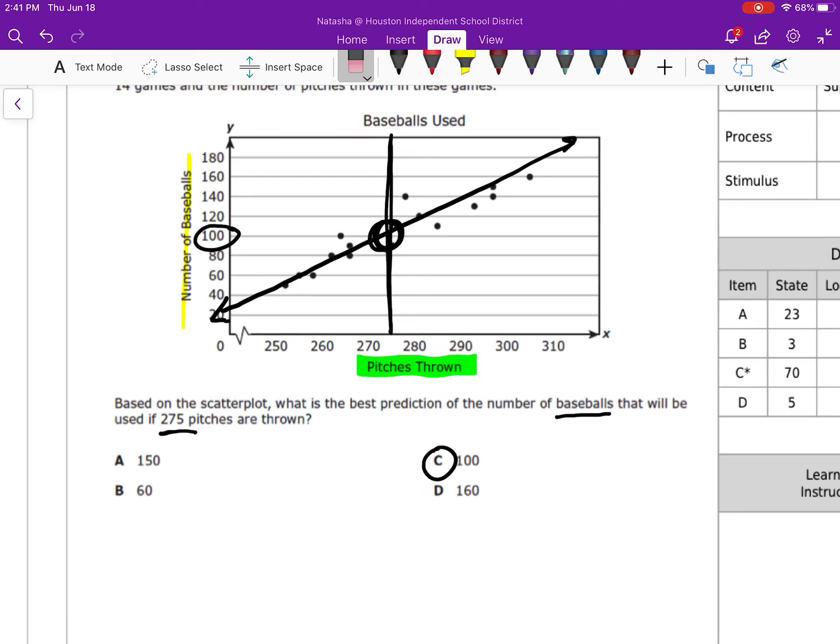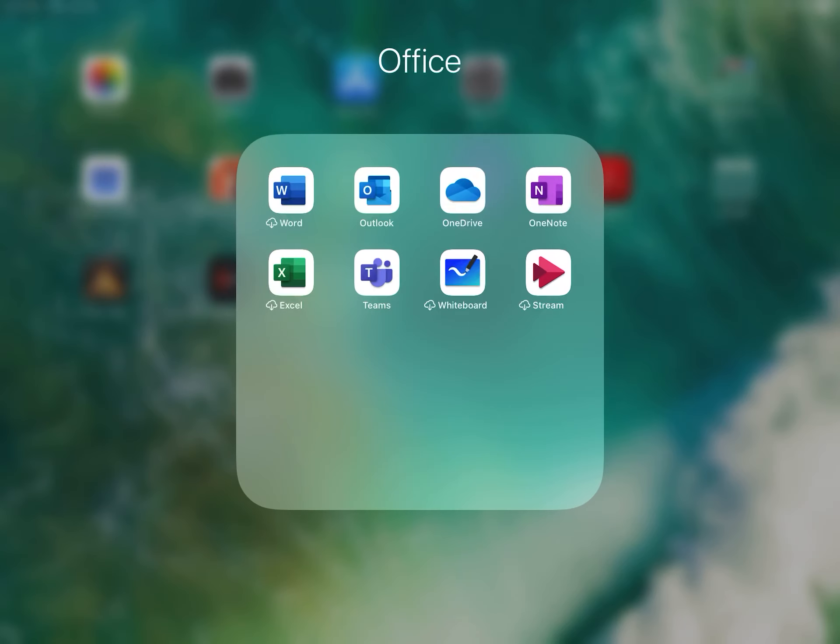Another way you could do it, another way that you could predict this and make the prediction is you could pick two points that are in the same area, so like maybe pick that point there and probably maybe that point there and then create your equation. That's another way you can handle that one.